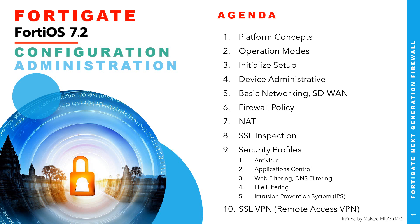Number six is the firewall policy, where we will talk about source NAT and destination NAT. Number eight is SSL inspection — we will talk about this as well. As you know, currently most traffic, mostly all HTTP or HTTPS traffic — about 95% according to Google's report — is encrypted. So we need to cover this topic before we go to security profiles like antivirus, application control, web filtering, DNS filtering, file filtering, and intrusion prevention. The last agenda, number ten, is regarding SSL VPN for remote access.